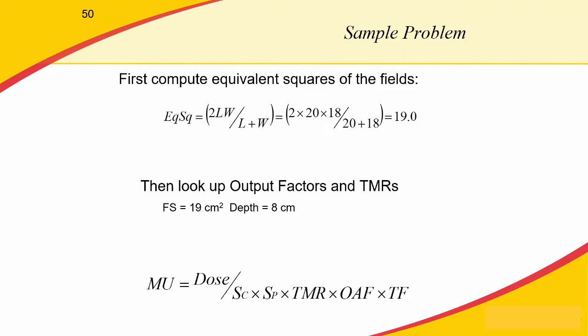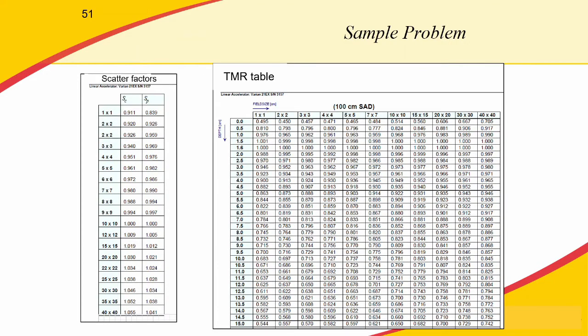Looking at the output tables provided by the department, we look up our scatter factors. For a 19 by 19 cm field, we have 15 by 15 and 20 by 20 in our table, so we interpolate between those two values to get 19 by 19. We might use, for instance, 1.025 and 1.019 for our two scatter and collimator factors.